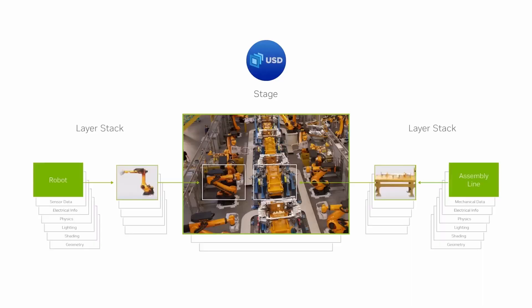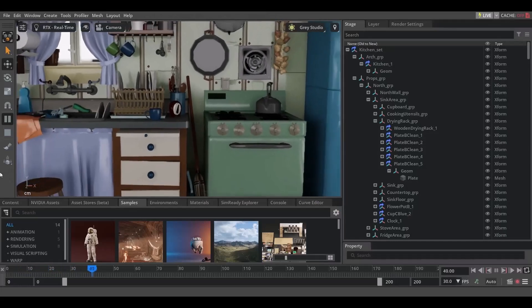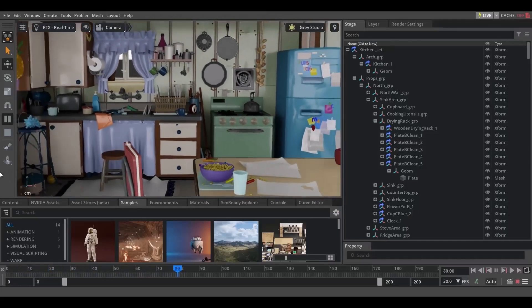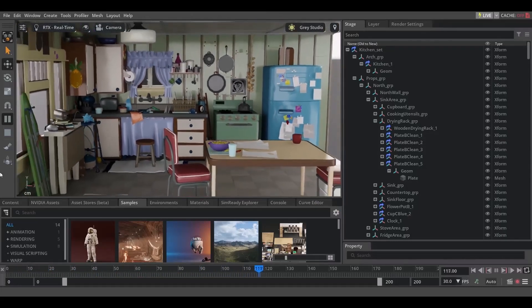OpenUSD also has a couple of interesting key characteristics, which includes the non-destructive workflow that it brings, allowing for multiple composition of elements in a 3D scene. These can be handled in separate layers, and these layers can be worked on independently, making it possible for multiple team members to collaborate on the same project simultaneously without affecting each other's progress. For example, an animator could be working on character movement without disrupting or overwriting the lighting adjustments made by another team member.